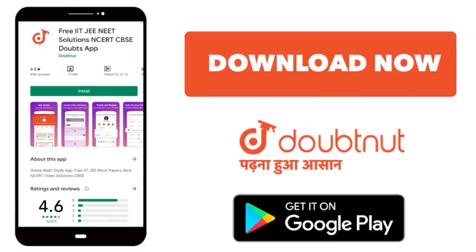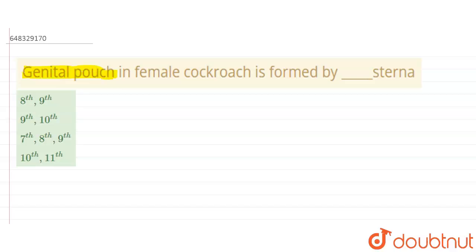the question. The question says that genital pouch in female cockroach is formed by sternum. Here we have the options: 8th and 9th, 9th and 10th, 7th 8th and 9th, and the last option is 10th and 11th.